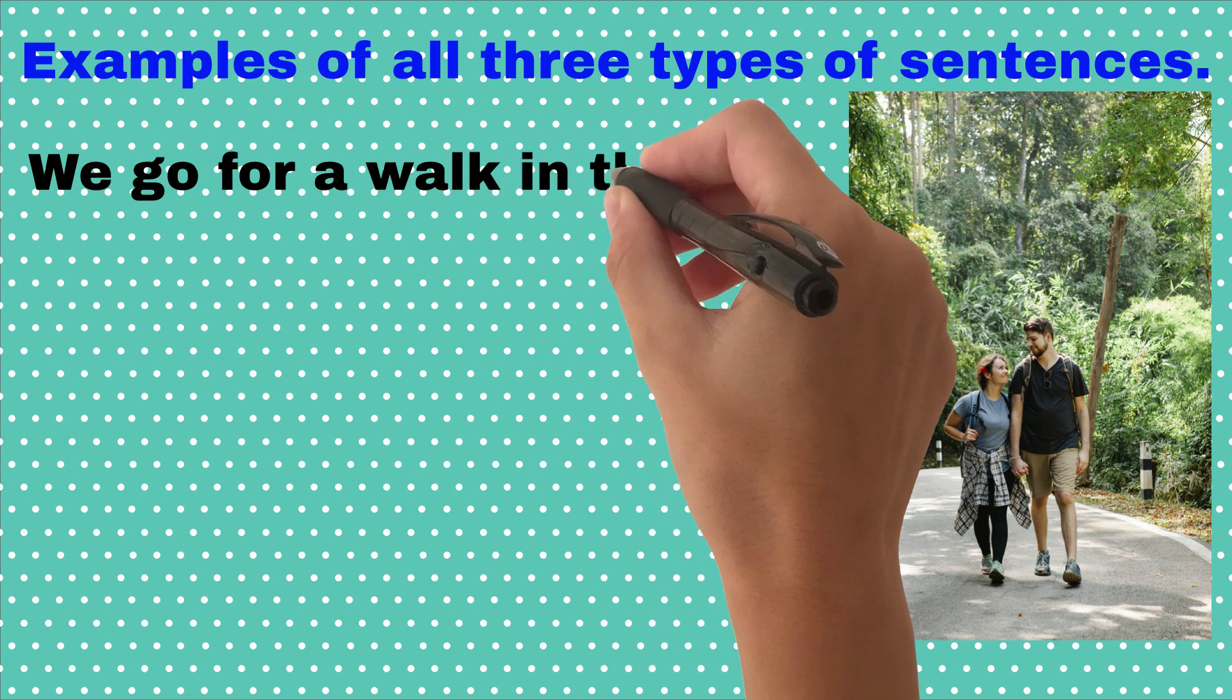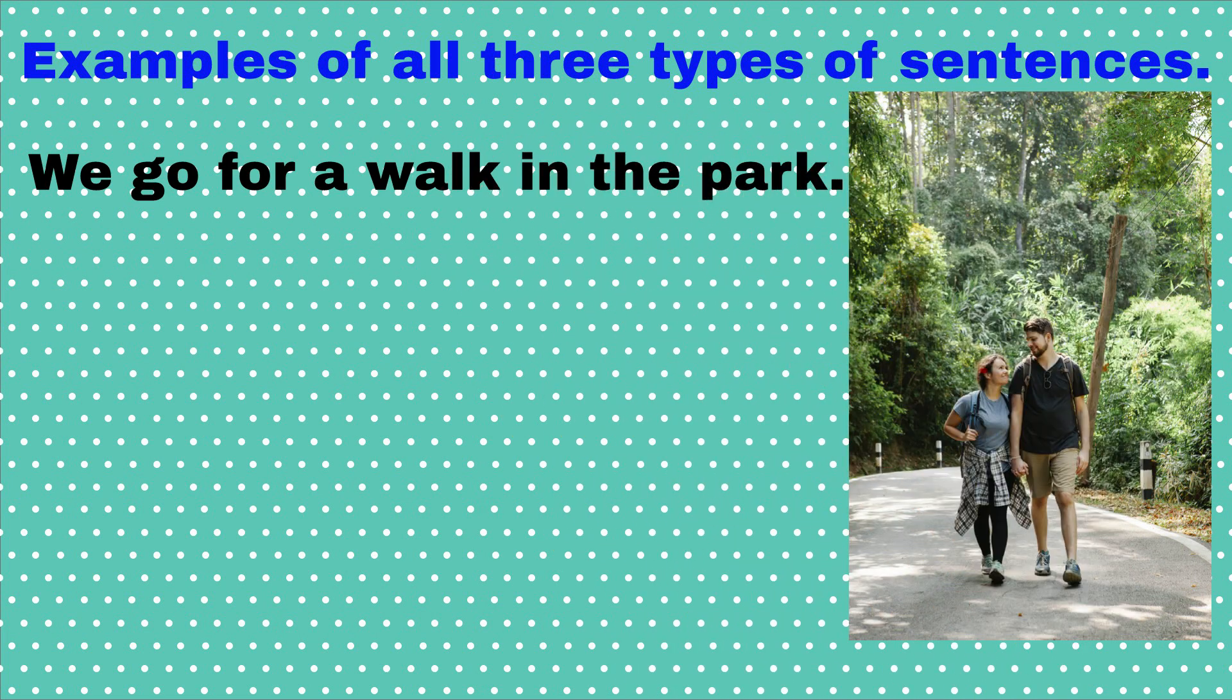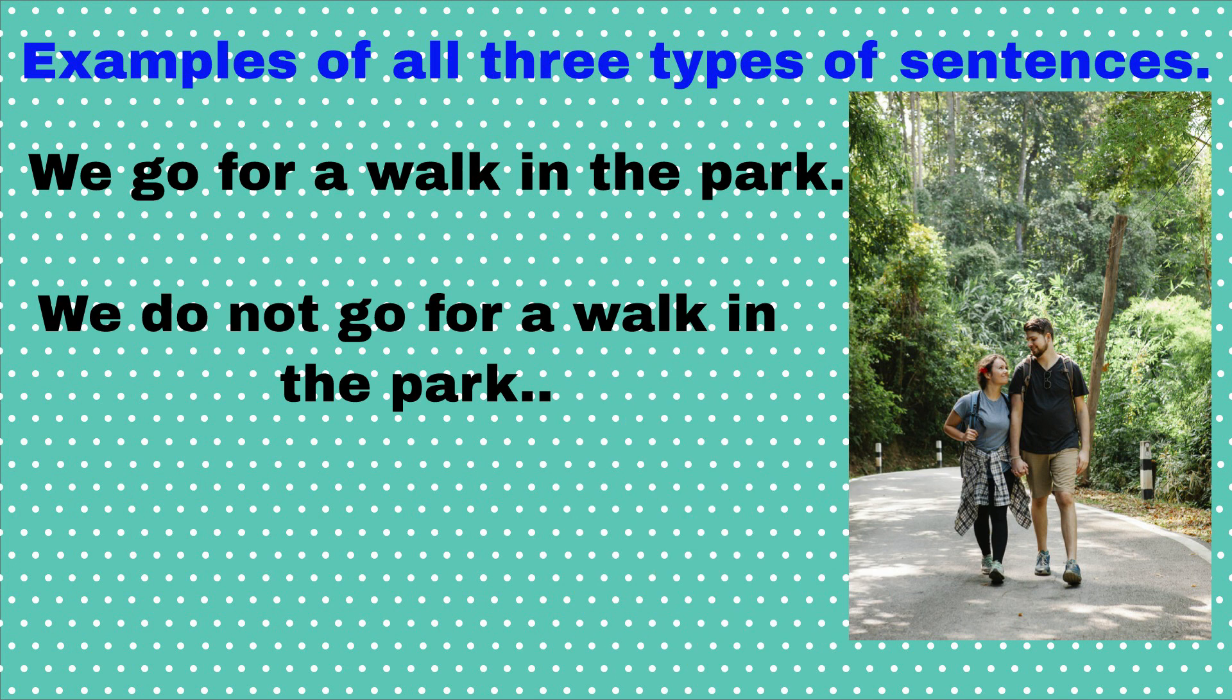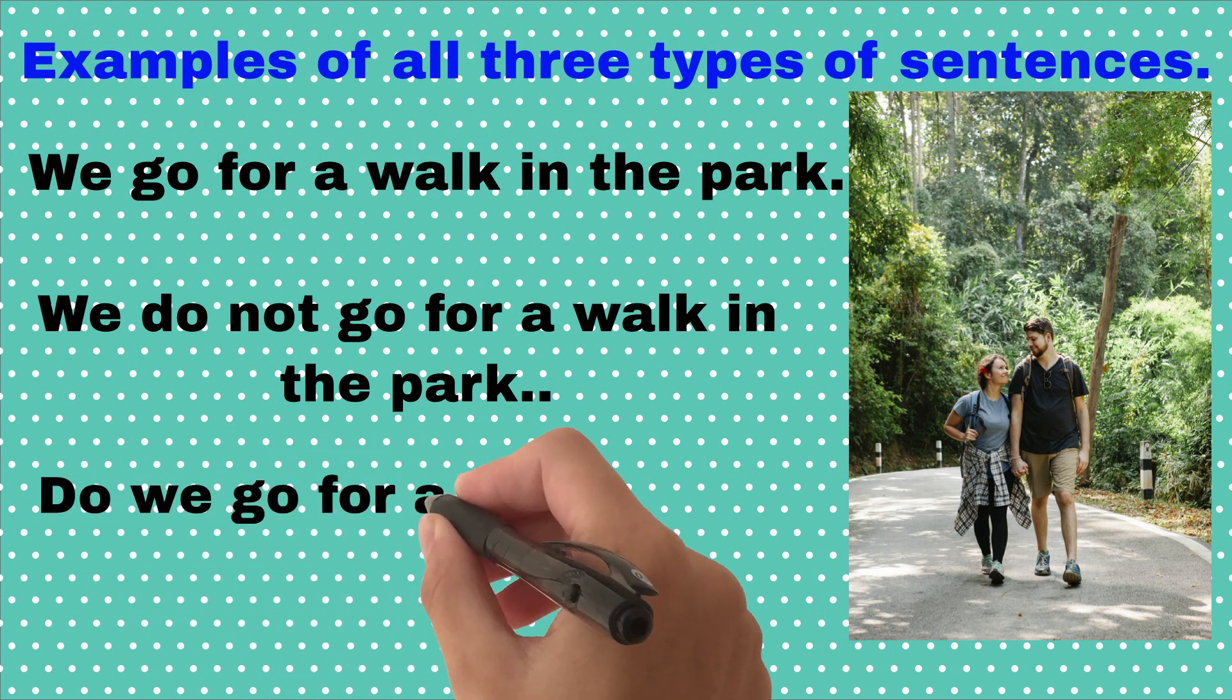We go for a walk in the park. Here, subject we is plural, so we use a simple form of verb and will not add es or s with the verb. We do not go for a walk in the park. Here we added do as a helping verb because subject we is plural. Do we go for a walk in the park?